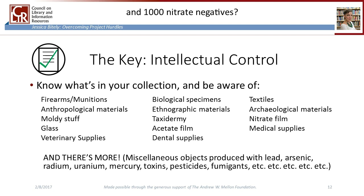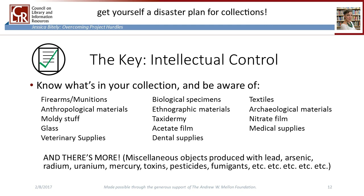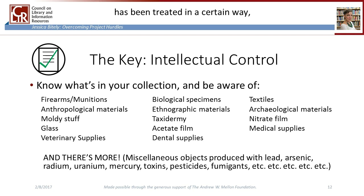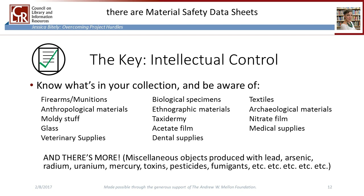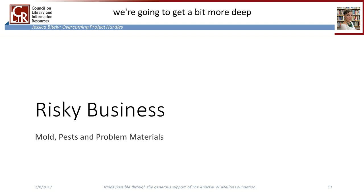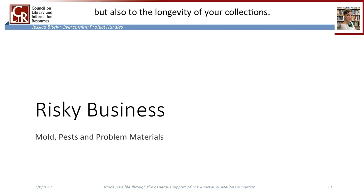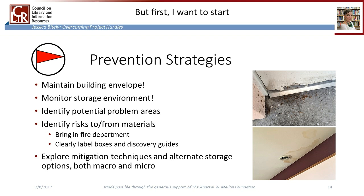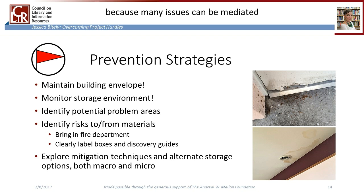For example, if you have two taxidermied birds and a thousand nitrate negatives, start exploring what to do with those negatives. Also, get yourself a disaster plan for collections. Many additional resources can be found on the wiki. I also want to mention that if you have a sense that an item has been treated in a certain way — for example, you think something might have arsenic on it — there are material safety data sheets you can look up to find out more about how to handle these items. Now we're going to go more deeply into a small set of risks that represent a hazard not only to human health but also to the longevity of your collections. These include mold, pests, and combustible or explosive materials. First, I want to address some basic prevention strategies, which largely have to do with environmental risks, because many issues can be mediated by careful environmental control. Mold can be prevented, pest activity can be reduced, and chemical degradation can be slowed.